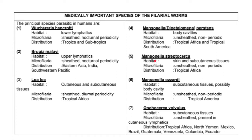Mansonella streptocerca's habitat is the skin and subcutaneous tissues. Its microfilariae are unsheathed and non-periodic, distributed in tropical Africa. Mansonella ozzardi's habitat is subcutaneous tissues and possibly the body cavity; its microfilariae are also unsheathed and non-periodic, distributed in tropical Americas. Onchocerca volvulus' habitat is subcutaneous tissues; its microfilariae are unsheathed and present in cutaneous lymphatics. Its distribution includes tropical Africa, North Yemen, Mexico, Brazil, Guatemala, Venezuela, Colombia, and Ecuador.